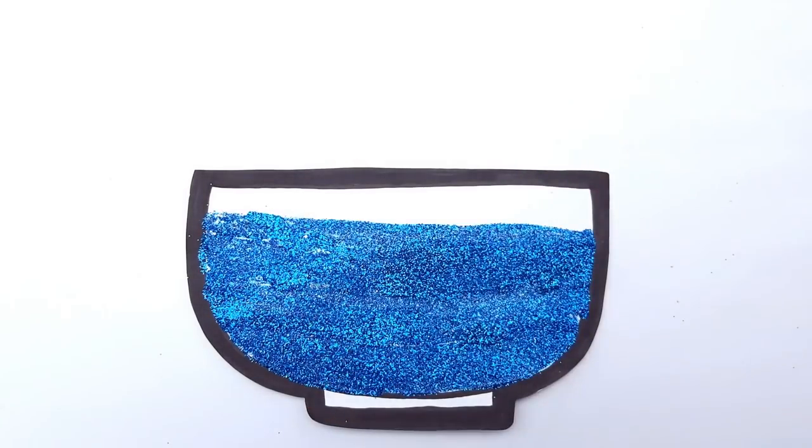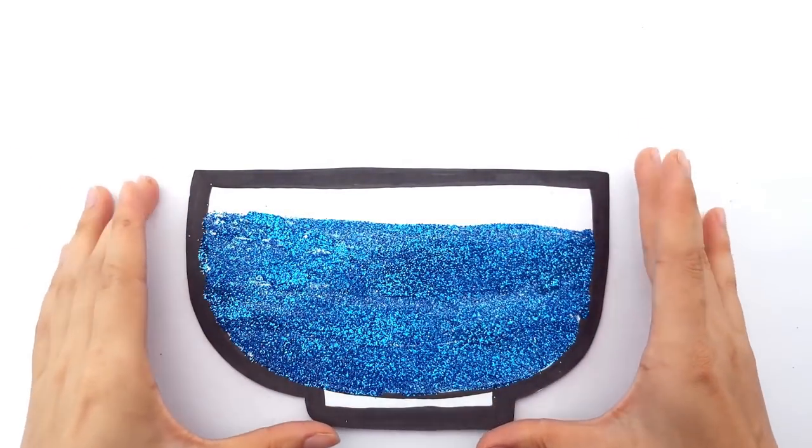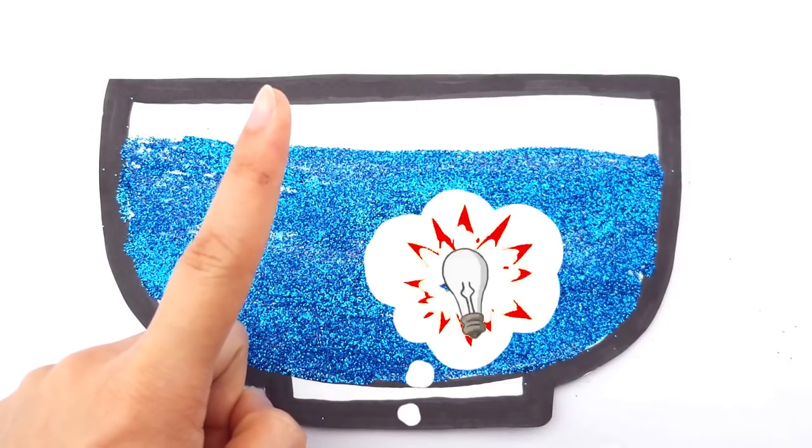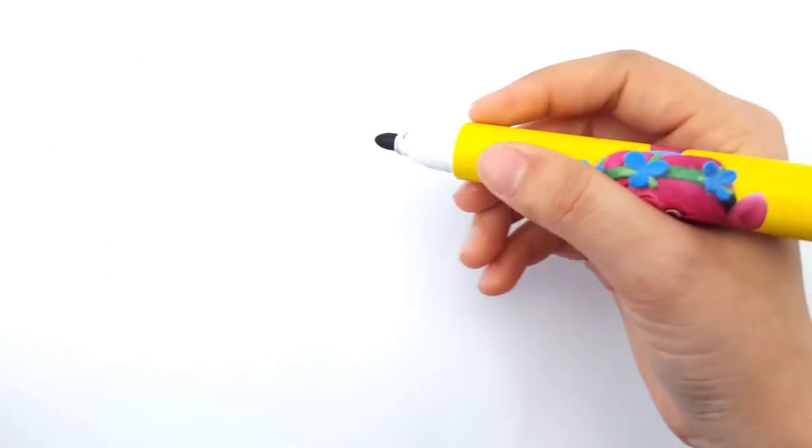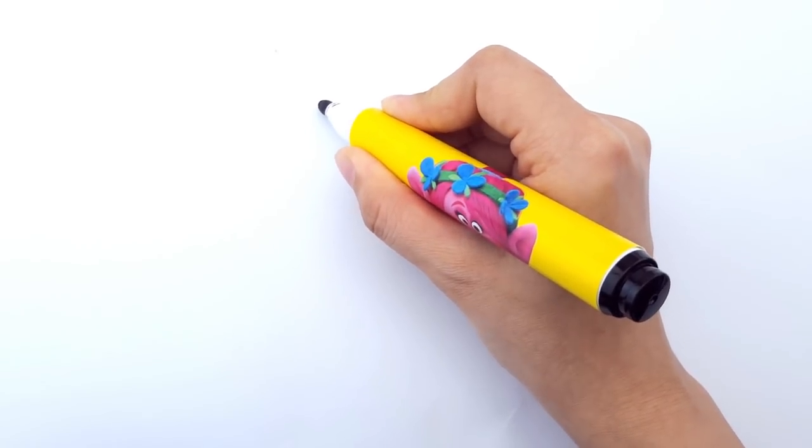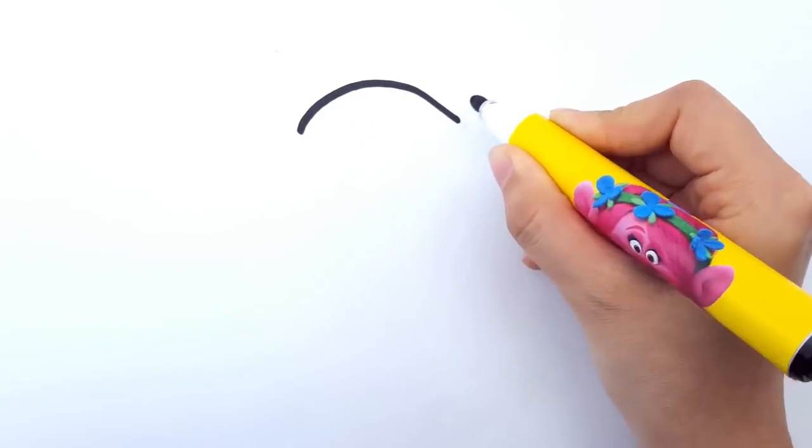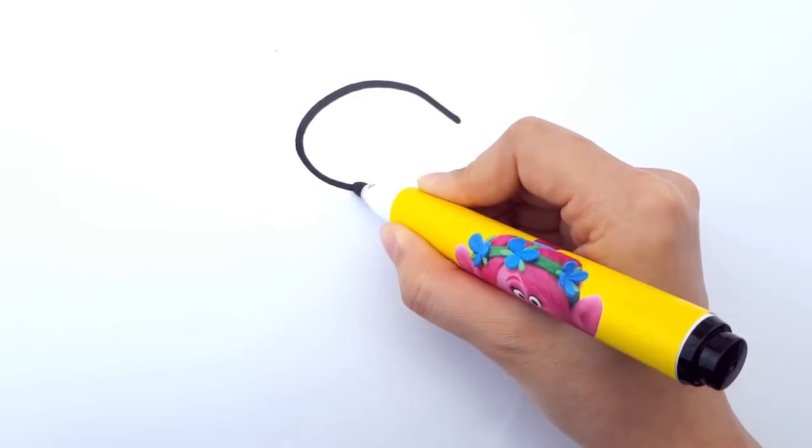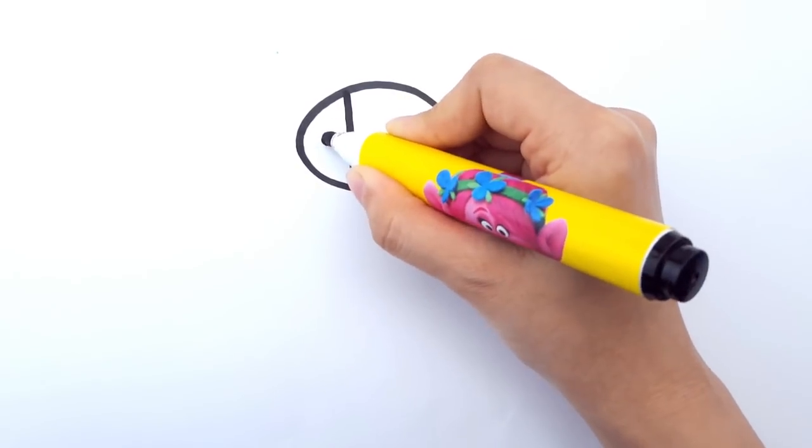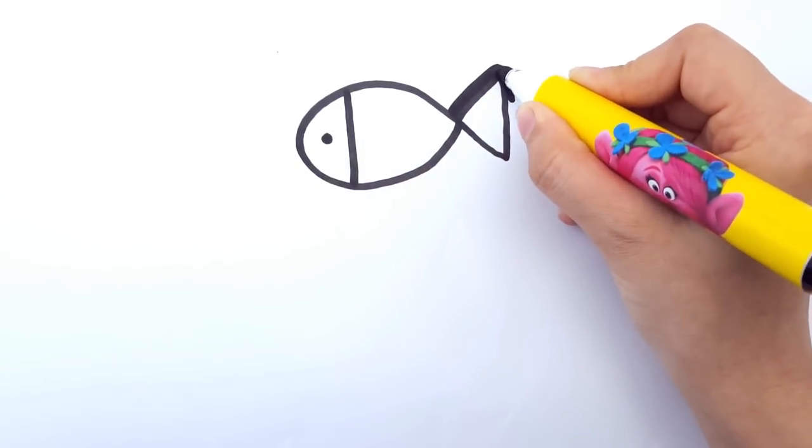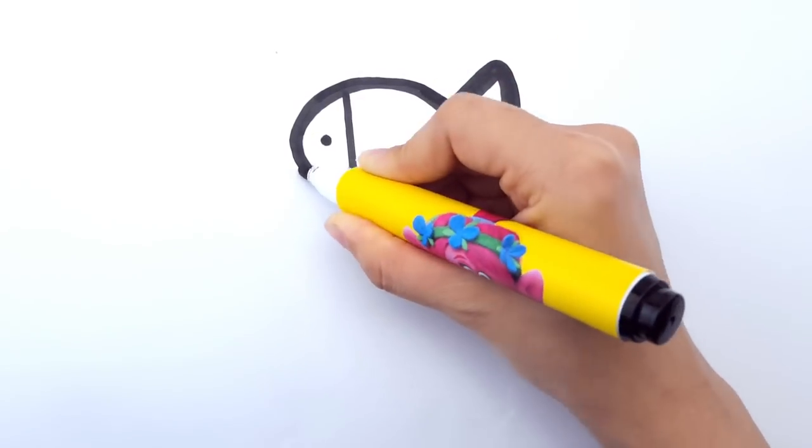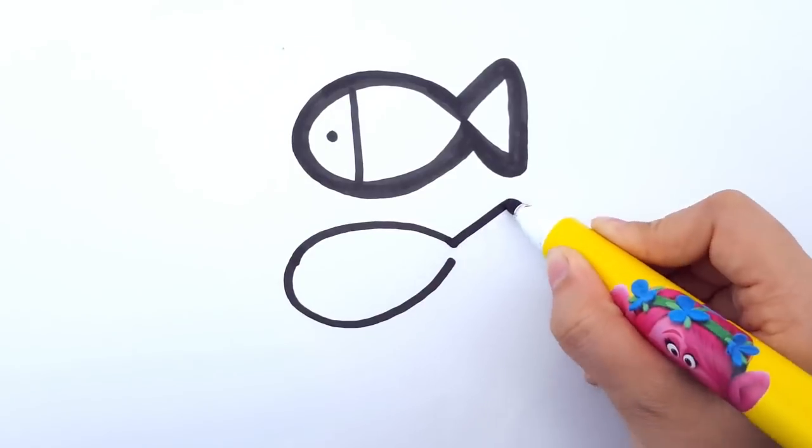Okay, now that we have a bowl of water, what else do we need? I know, I know, we need some fish. Let's draw some fish. It's very easy, follow me. First you need to draw a body of the fish and then the tail of the fish, and then you have a little line for the fish head and the eye. Let's do all that again. Voila, we have a fish.